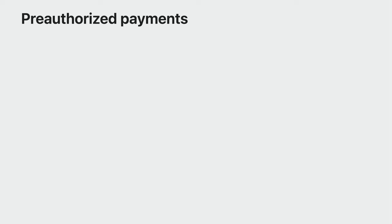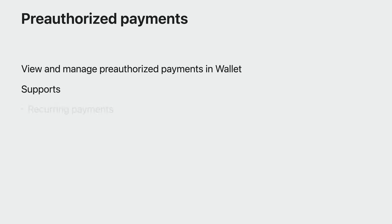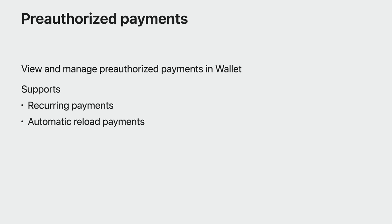And that's a look at Apple Pay Later. Next up, we'll talk about pre-authorized payments. In iOS 16, we introduced pre-authorized payments. Users are able to view and manage payments they've pre-authorized in Wallet, and merchants are able to charge the user according to the agreed terms. We initially provided support for recurring payments and automatic reload payments, and we now also support deferred payments. All three pre-authorized payment types are available for use in apps as well as on the web.